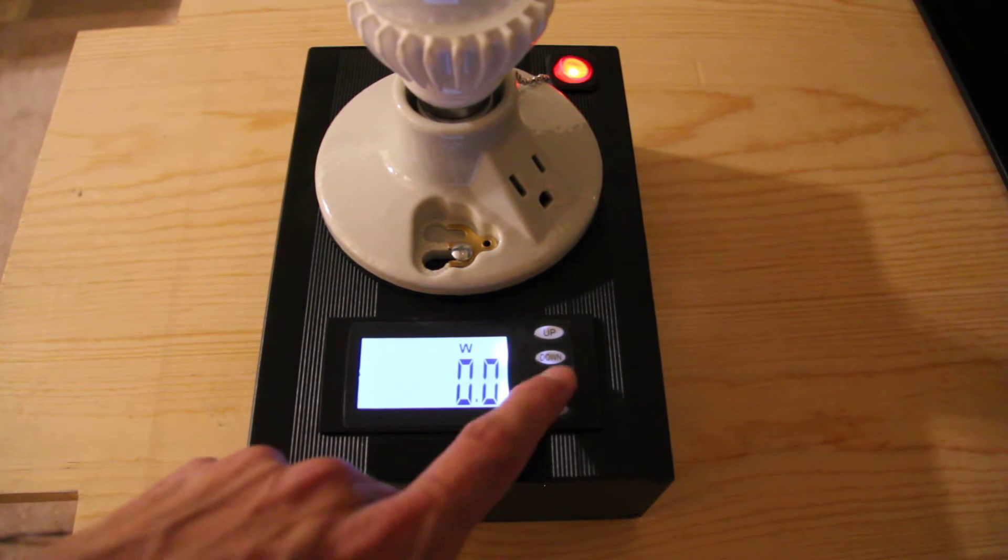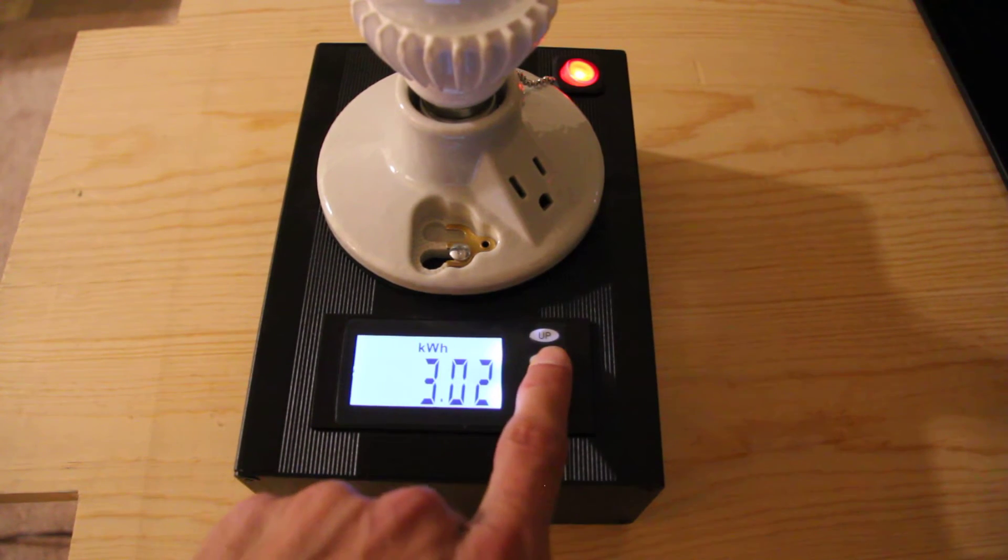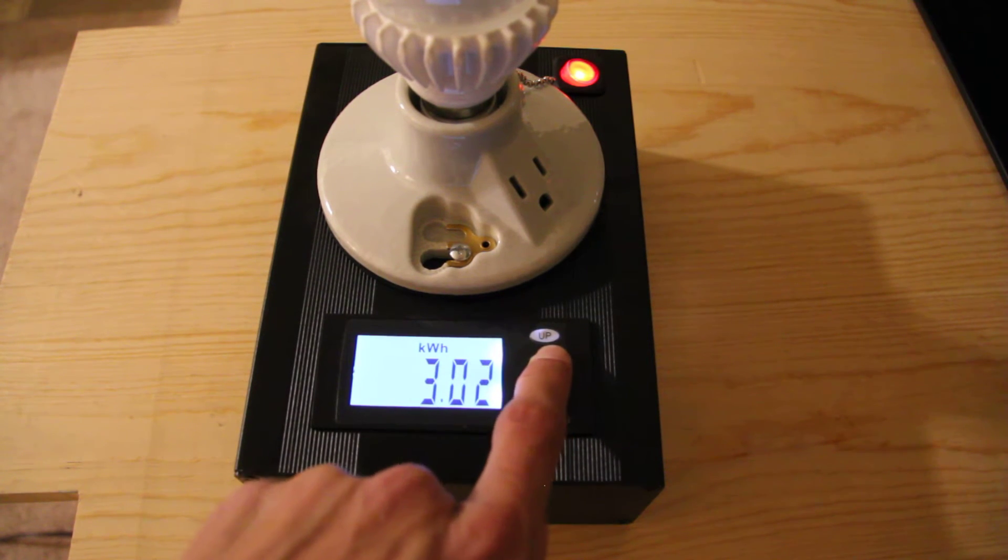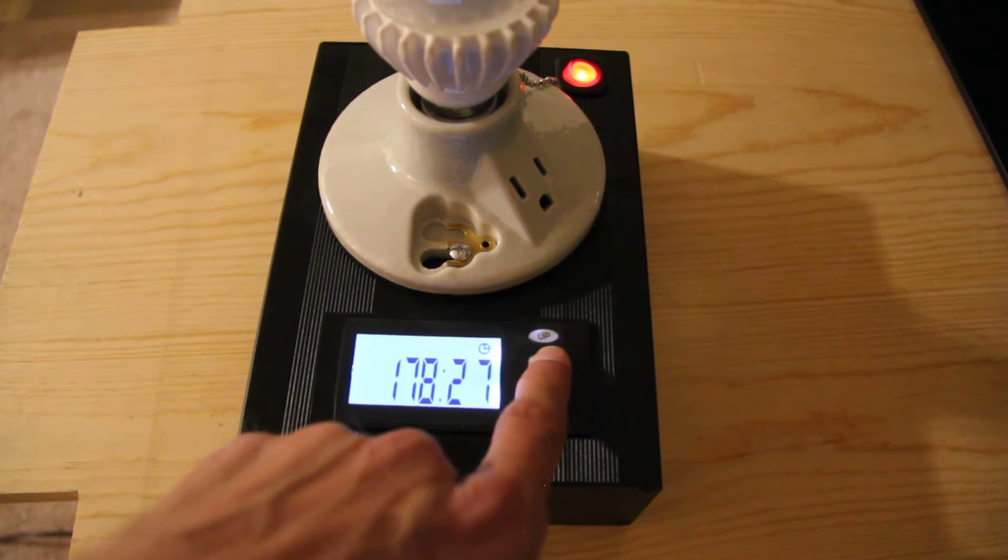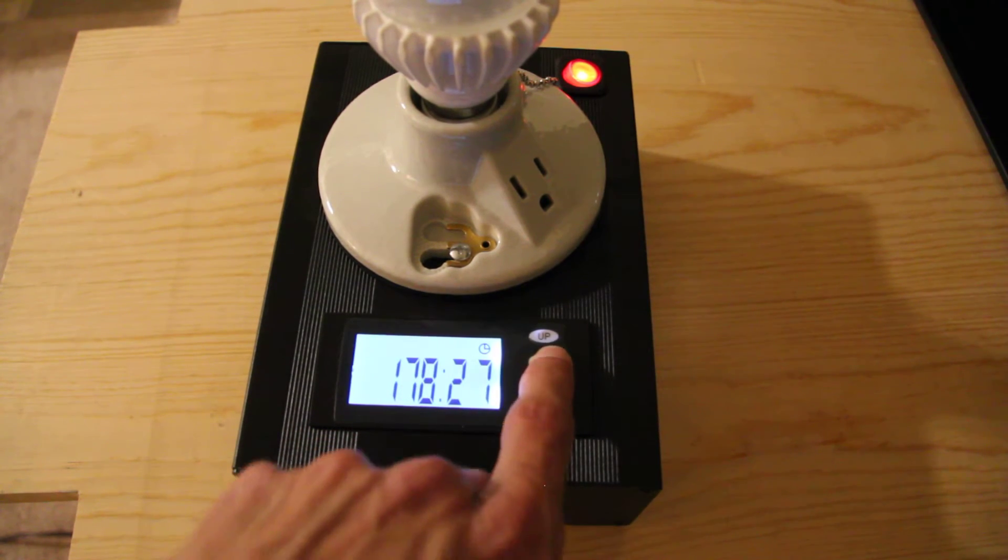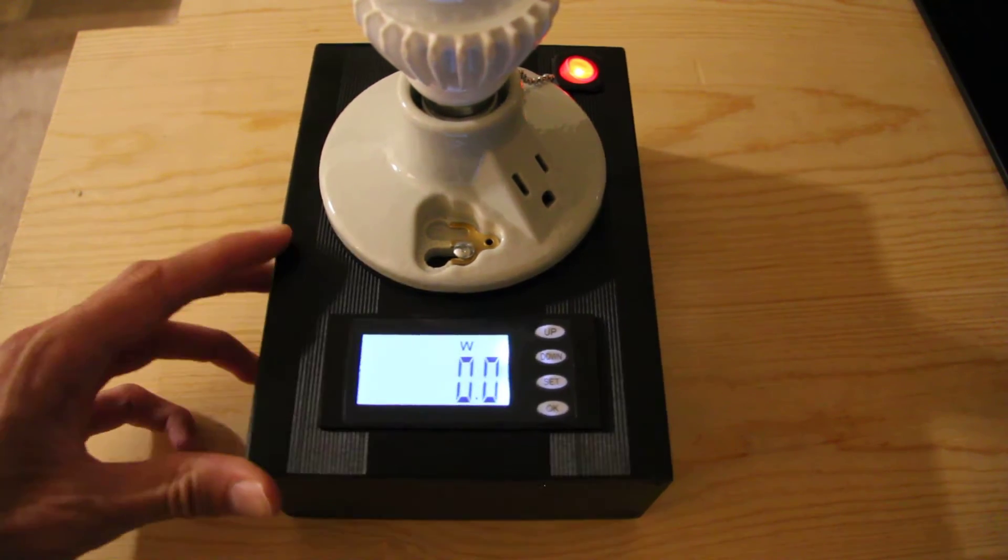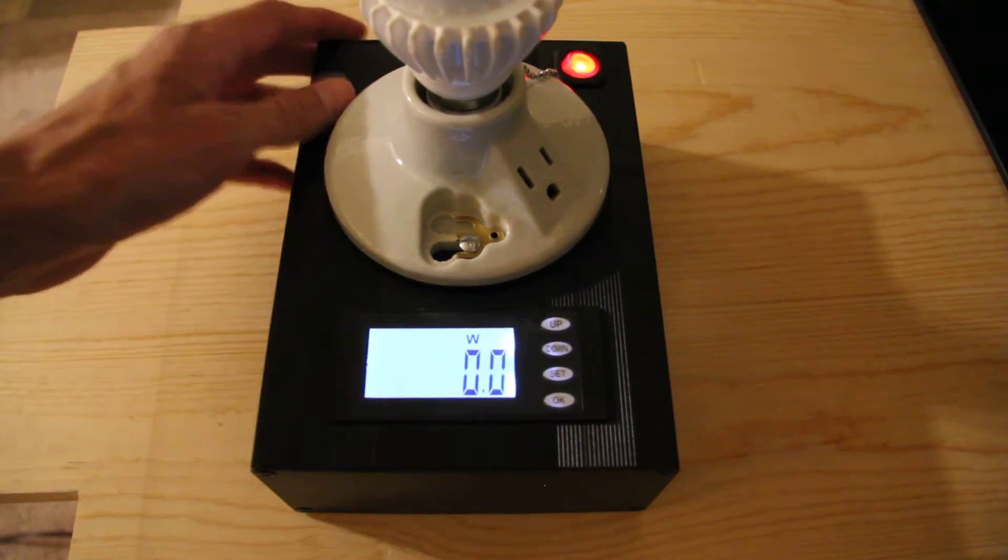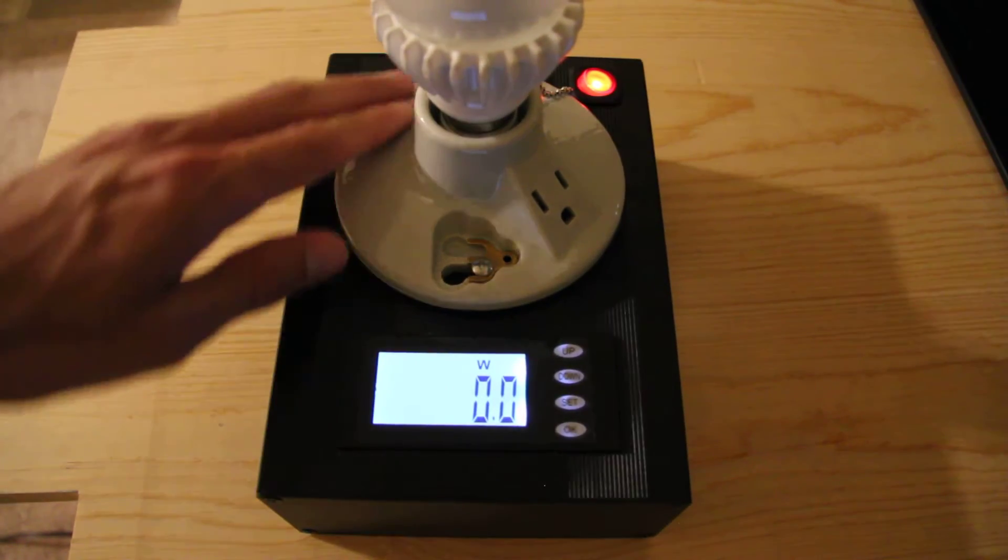Before I turn it on let me go through the different modes. So this mode here is kilowatt hours cumulative. So 3.02 kilowatt hour cumulative since it's been reset. Amps, volts, how many hours it's been powered on. And then back to watts which I find to be the most interesting metric on here.